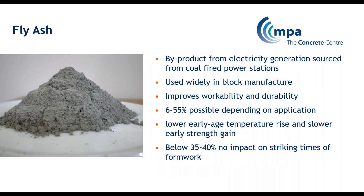The other main addition is fly ash, which comes from coal-fired power stations. It is basically the ash collected from the flue. When looked at microscopically, fly ash particles are very rounded, which improves workability and also improves durability. Both GGBS and fly ash can be used as part of sulphate-resisting concrete. You can only get up to about 55% replacement with fly ash. Again, it reduces the early-age temperature rise and slows early-age strength gain, but at around 35% to 40% there shouldn't be any impact on striking times for formwork. In colder weather it will go off slower.